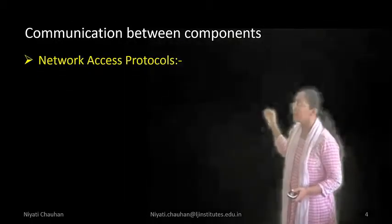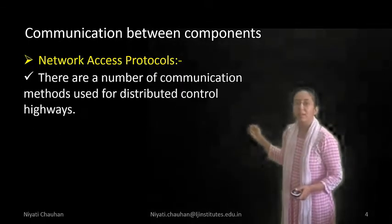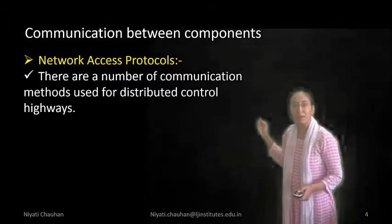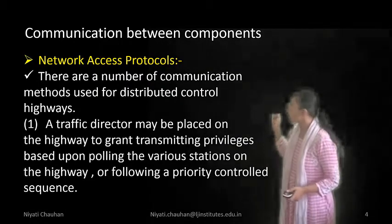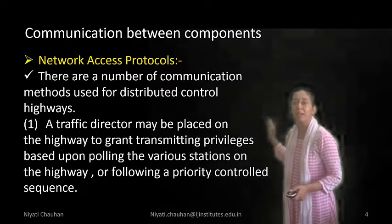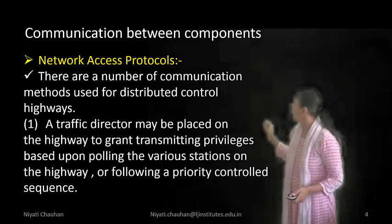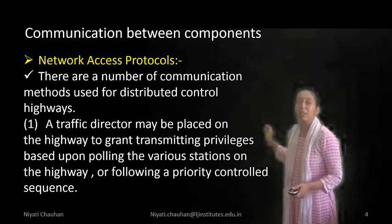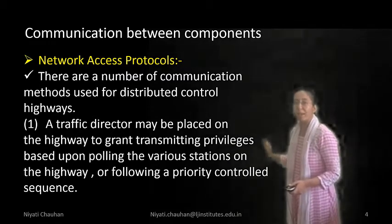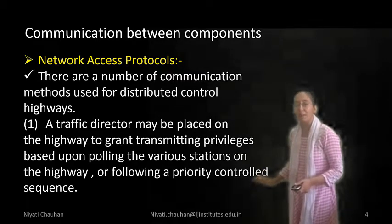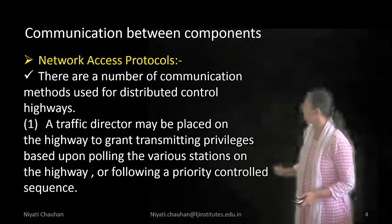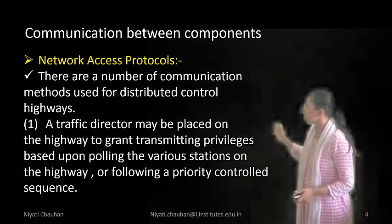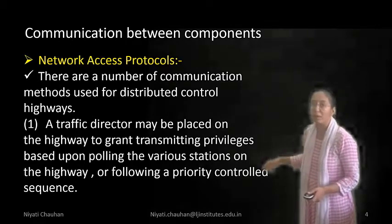Next, network access protocols. There are a number of communication methods used for the distributed control highway. First, a traffic detector may be placed on the highway to grant transmitting permissions based upon polling the various stations on the highway, or following a priority control sequence. Here in the traffic detector, we check whether our message is being sent in sequence or not.